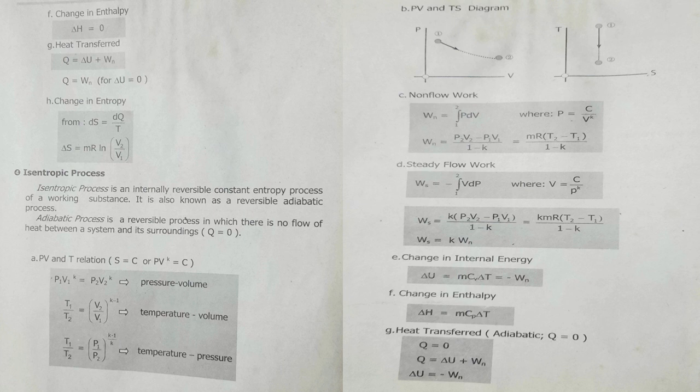The next process is the isentropic process. An isentropic process is an internally reversible constant entropy process of a working substance. It is also known as a reversible adiabatic process. An adiabatic process is a reversible process in which there is no flow of heat between a system and its surroundings, so Q equals 0. In the relation of pressure, volume, and temperature, we have PV raised to K equals constant.